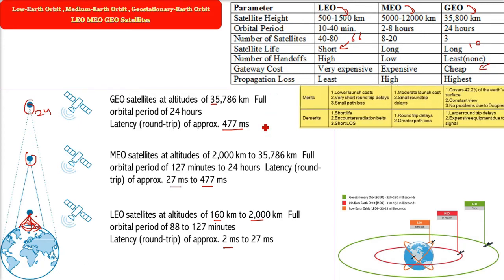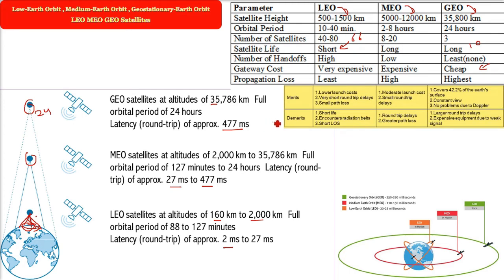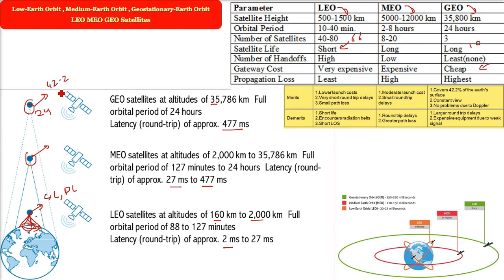Now let me tell you about the merits and demerits. For LEO, the merits are: the launch cost is lower than the other two; since it is very close to Earth, there are very short round trip delays or latency; and the path loss is less than MEO and GEO. For MEO, the merits are: launch cost is moderate, between LEO and GEO; and round trip delays are smaller than GEO. For GEO, the merits are: it covers around 42 to 43 percent of the Earth's surface, so fewer satellites are needed; there is a constant view since its orbital period matches Earth's rotation; and there is no Doppler effect problem.